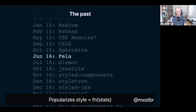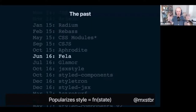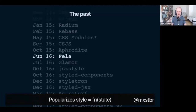In June 2016 we got Fela by Robin Frischmann, also from Berlin. Fela really introduced the concept of your style being a function of state. React coined itself as 'your view is a function of state,' and Fela introduced the same concept to your styles — you can now dynamically adjust your styles based on the state of your application. That turned out to be really, really powerful. Fela is a great library, still widely used and maintained — highly recommend checking it out.